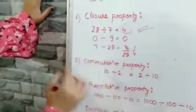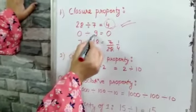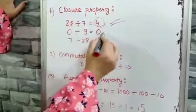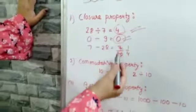Here dividend is 0, divisor is 9, and the quotient is 0. So I've already told you 0 is also a whole number, so this property exists in this example also.